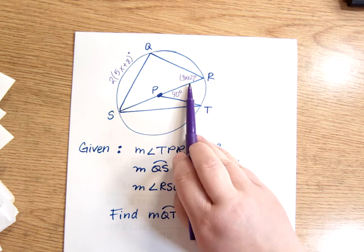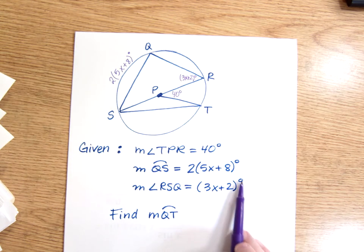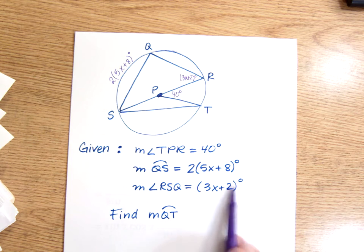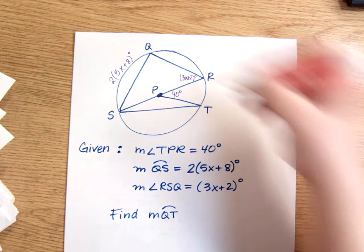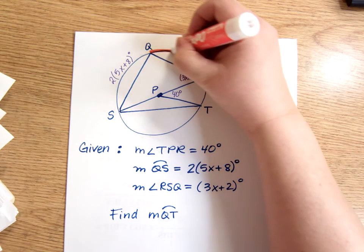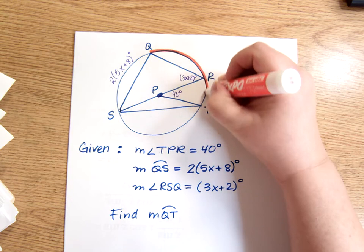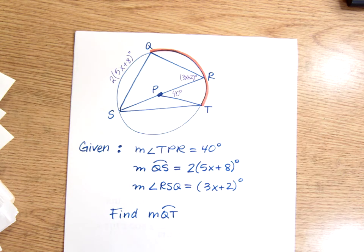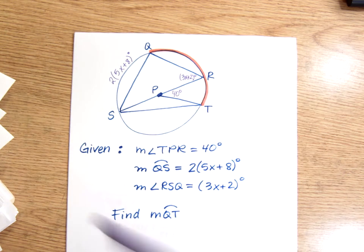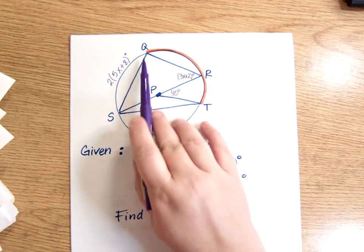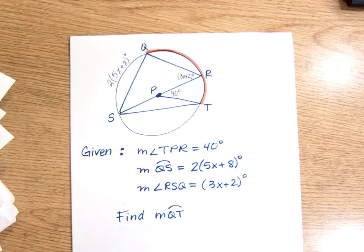The only reason this is in parentheses, by the way, is just because it's saying this degree symbol applies to the whole thing. So I'm being asked to find from Q to T. I know it's this direction, because if I were to go the other direction, I would be going more than halfway around the circle, and so therefore I'd have to name it as a major arc and use more than two letters.